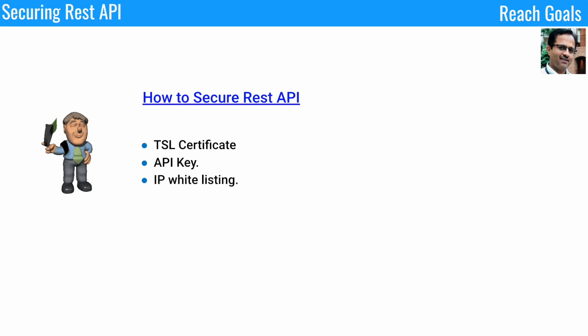We also need to use IP whitelisting. Allow only the designated IP address or machines to access your APIs.